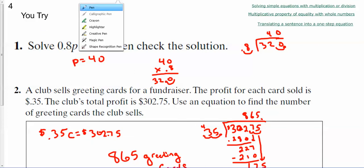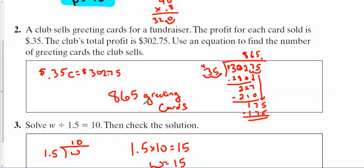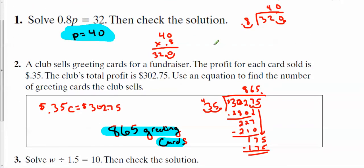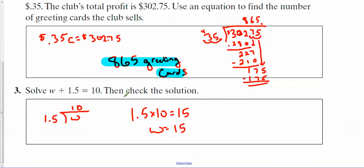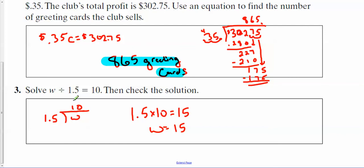All right. So here's what I came up with as my answers. I had p equaling 40. I had 865 greeting cards. And I got p equaling 40 because I divided both sides by 0.8. And then I multiplied to check. Here, I divided both sides by 35 cents. And that's how I got the 865. And then here, I multiplied the two numbers together, 10 and 1.5, and got w equaling 15.